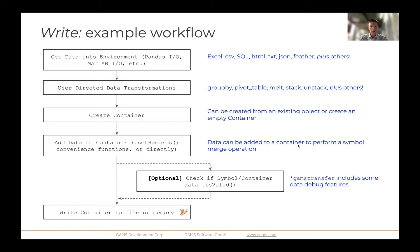GAMS transfer also contains some debugging features. There's the is valid check. Those two methods, is valid and check, are related, but they allow users to debug what their data contains. It checks for domain violations, makes sure that the columns are of the right data type and a number of other things. And once you've got data that's valid, you can go ahead and write the container to a file or something in memory.